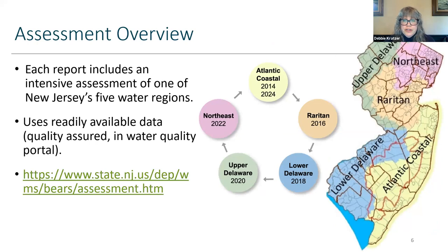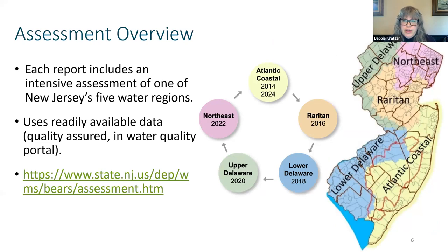We divide the state into five water regions. Each two-year integrated report focuses on one of the regions. The Rarway is grouped with the Raritan water region. We did an intensive assessment of the Raritan region in 2016 and we'll come back to do another intensive assessment in 2026. The whole state is covered every two years, and we can share the presentation website where you can get that report.